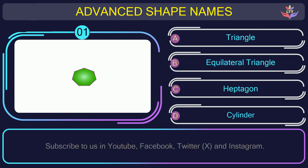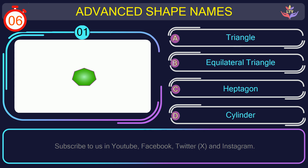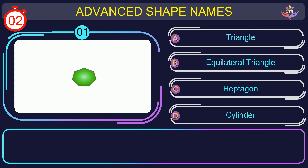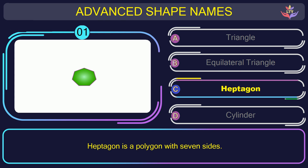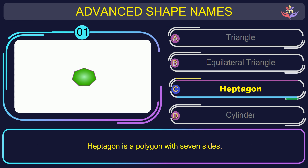Question number one. Find the name of the shape in this picture. The correct answer is option C. Heptagon. Heptagon is a polygon with seven sides.